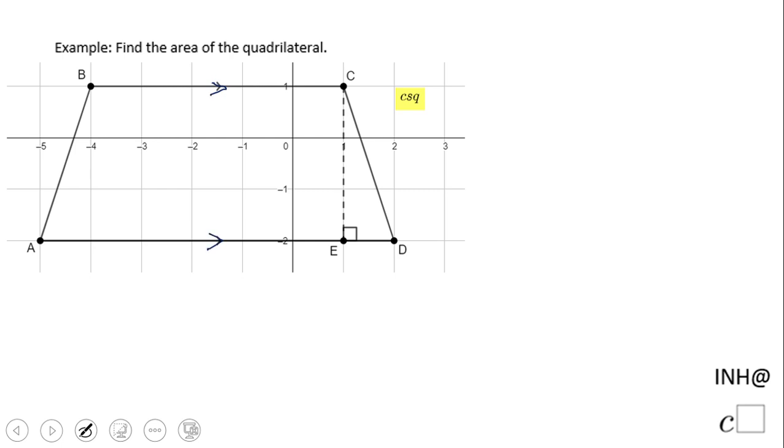If you notice, these two sides are parallel sides. Notice that. So that means this is a trapezoid. These two are not parallel—A, B—and these are the legs. So we have a trapezoid.